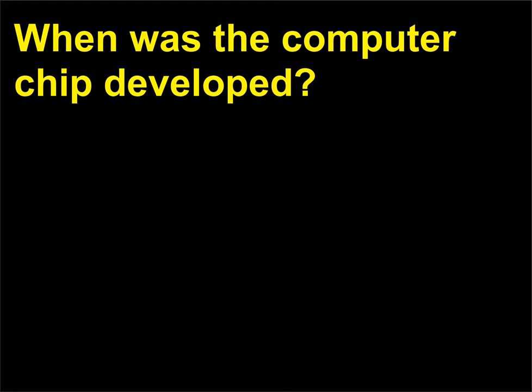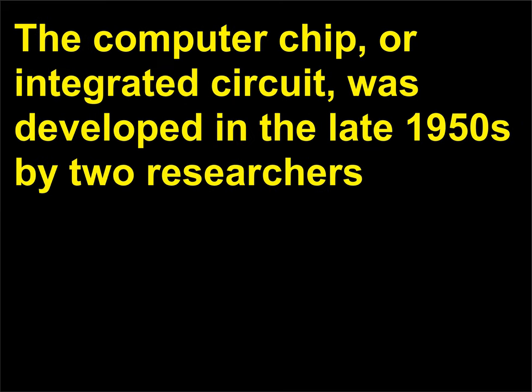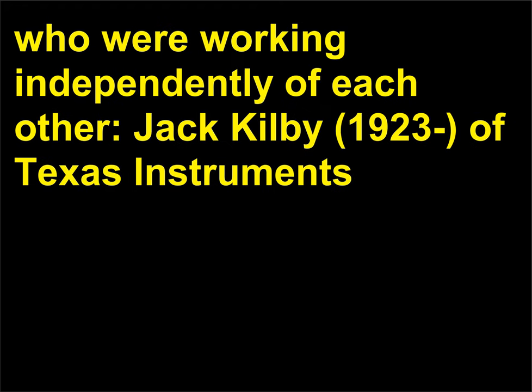When was the computer chip developed? The computer chip, or integrated circuit, was developed in the late 1950s by two researchers who were working independently of each other. Jack Kilby, born 1923, of Texas Instruments,